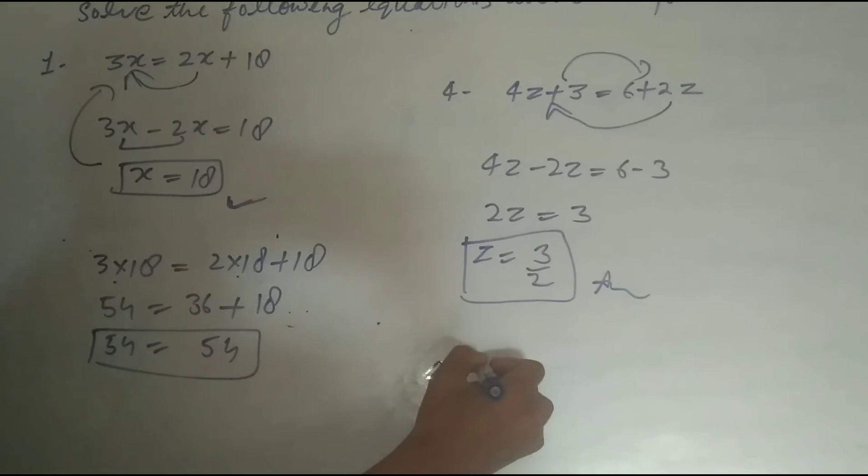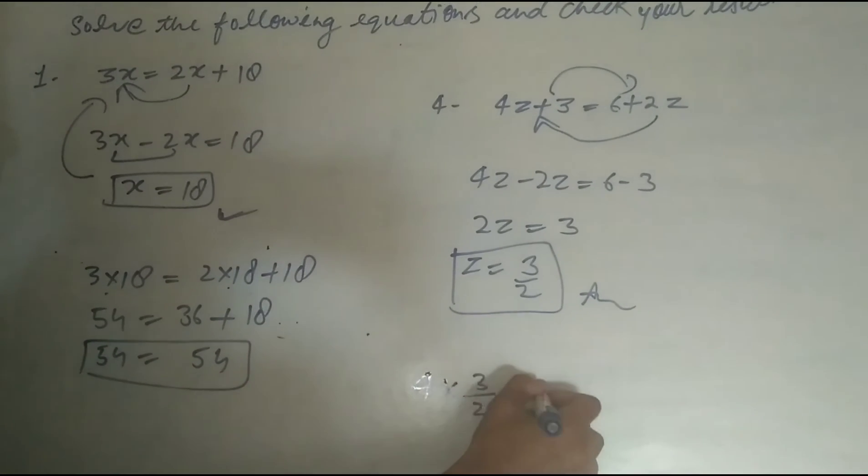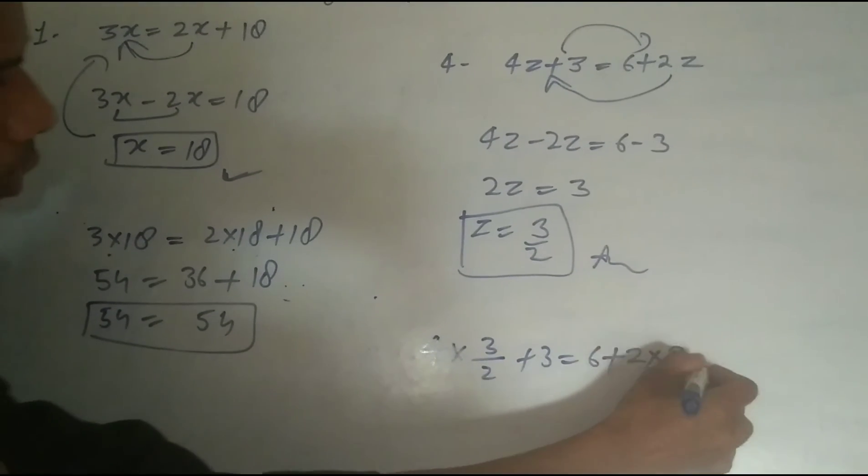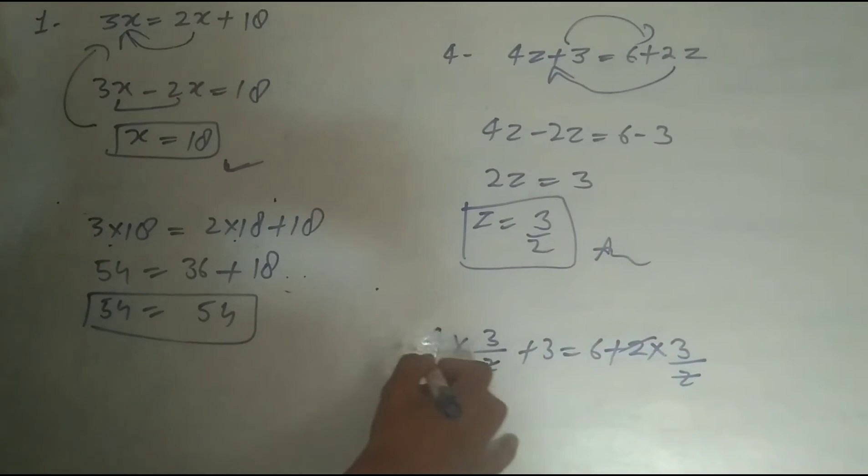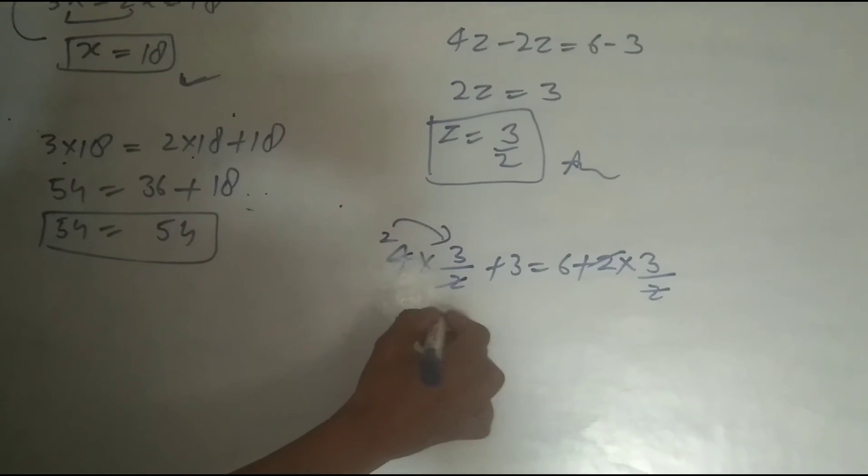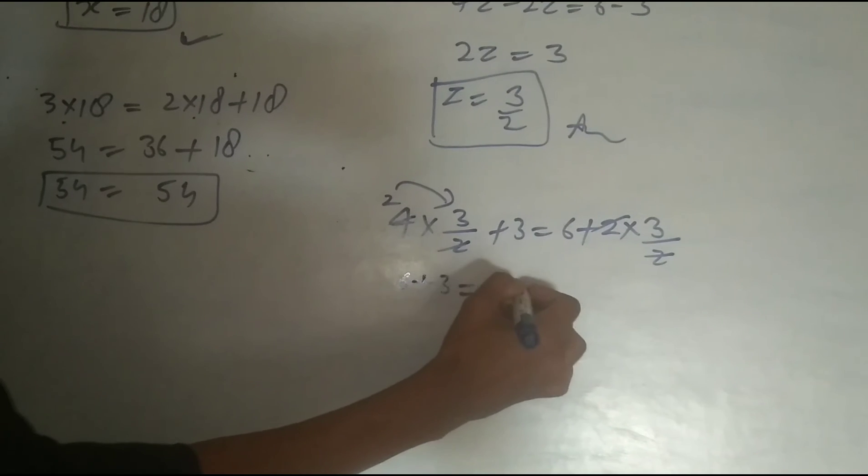So 4 × 3/2 + 3 = 6 + 2 × 3/2. 4 and 2 cancel to give 2, so 2 × 3 = 6. 6 + 3.